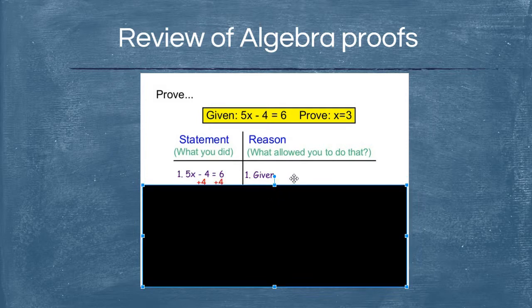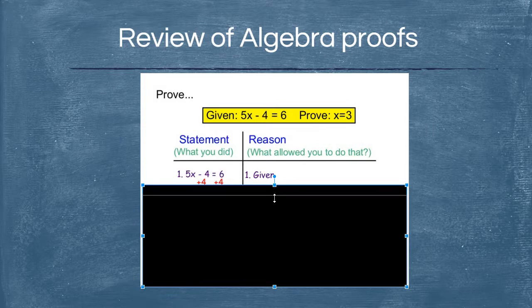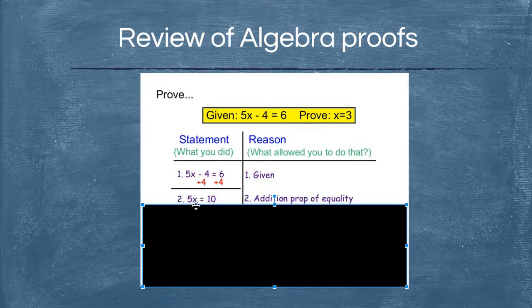Most of you would start solving by adding 4 to both sides. You may not remember the name of that property, but you are adding to both sides of the equation, so that's the addition property of equality — that's the reason you're allowed to do this. My next statement reads 5x equals 10, because the negatives cancel and 6 plus 4 is 10. We now have this new statement because of the addition property of equality.